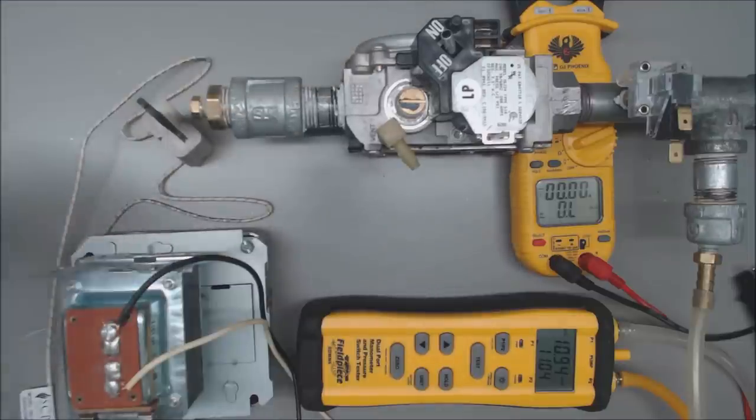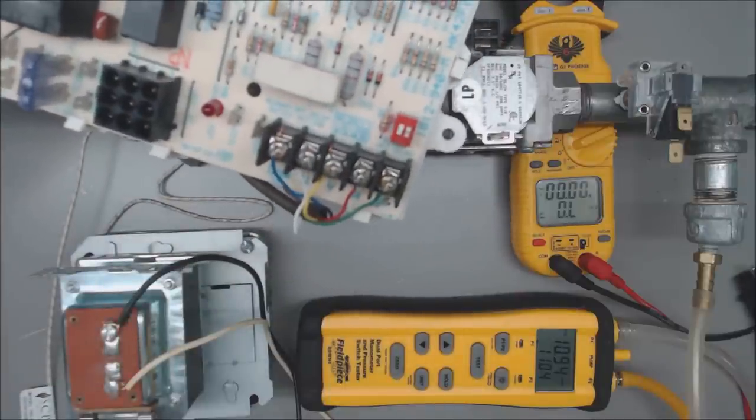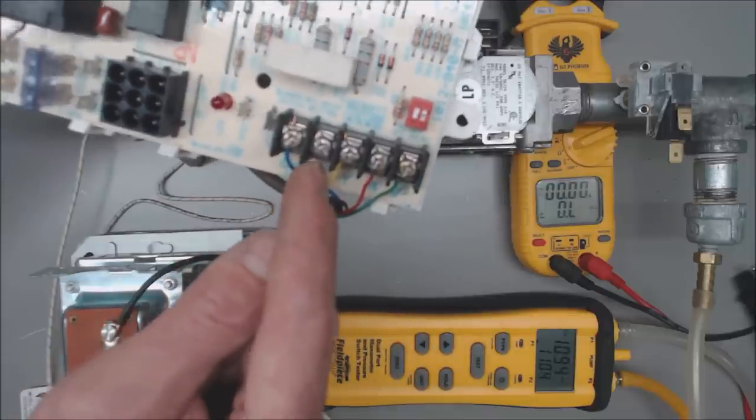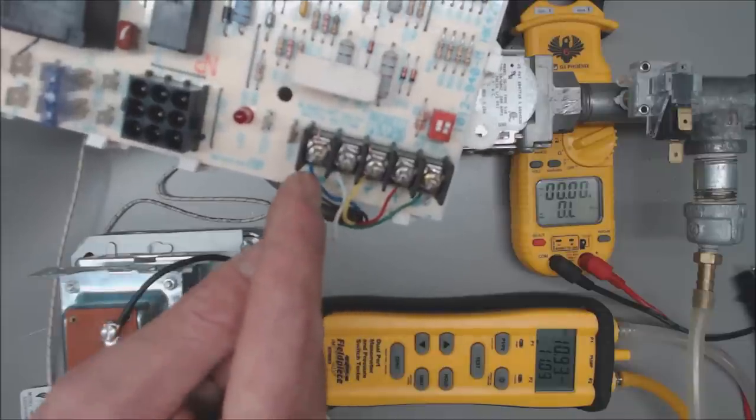In order for this to turn on you have to go through the sequence of operations. First, you need a call for heat at the thermostat which means that R and W are touching. Then at the control board, the board sees 24 volts on W and you can read it with your multimeter from W to common.